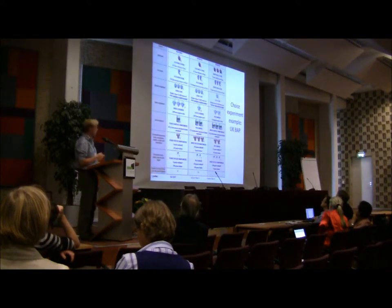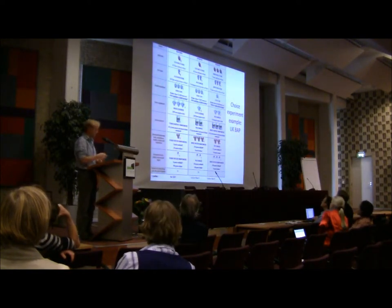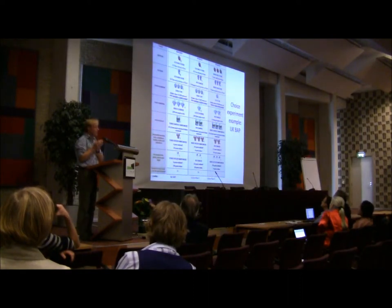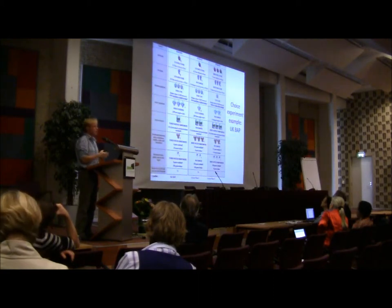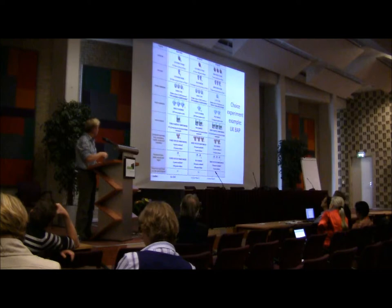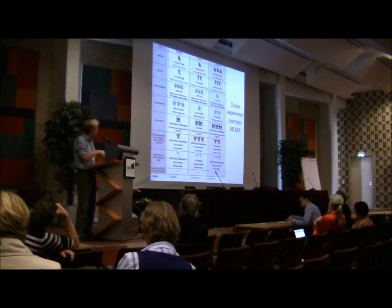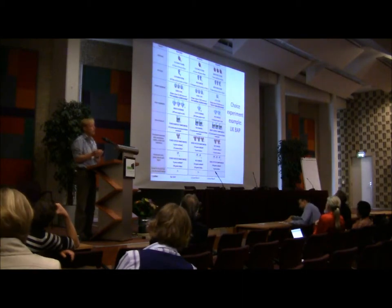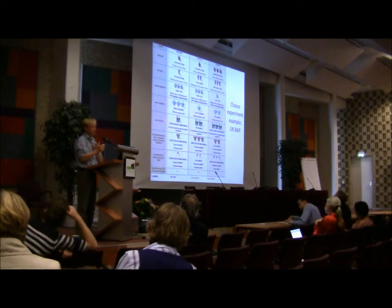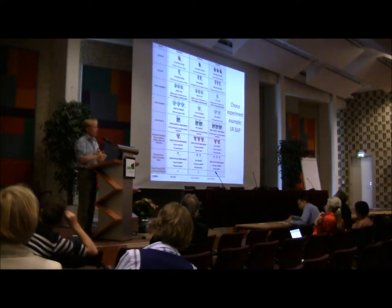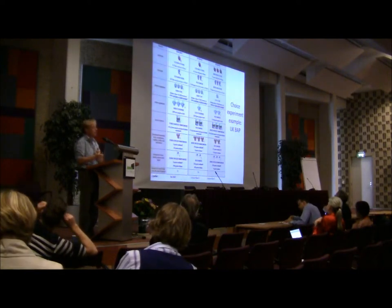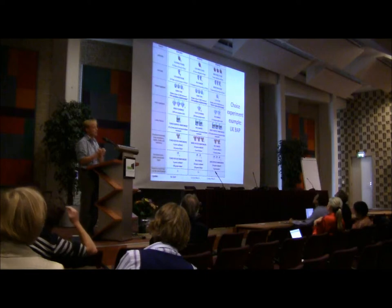In terms of the choice experiment, let's examine the choice task. You've got the baseline, where the assumption is that funds for the Biodiversity Action Plan have been removed, and all the services would decline. Through discussions with scientists and review of papers, we worked out what the impact on services would be. Scenarios A and B were based on one of three levels: either decline, the current level of service provision, or an enhancement where the Biodiversity Action Plan would meet all its targets to protect biodiversity.